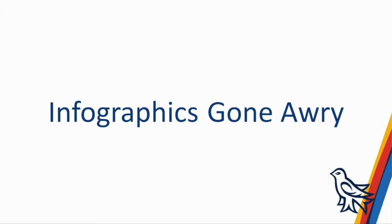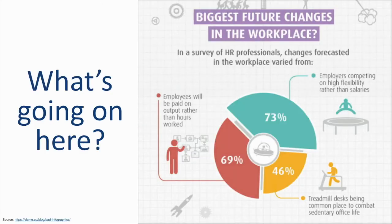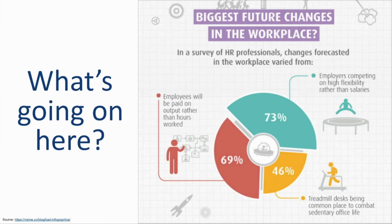Some examples of infographics gone wrong. The main thing here is that the numbers don't add up to 100%, and this can confuse readers. One possible reason is that people could select more than one answer to the question in the survey. A better way to display this would have been something like a bar graph. Pie charts are really good for showing 100%, so it could have used a different design and caused less confusion.